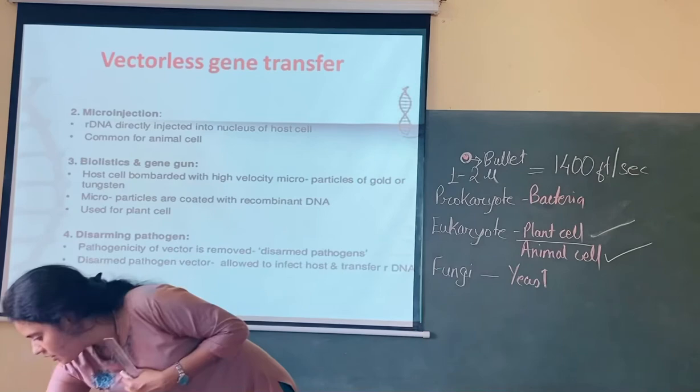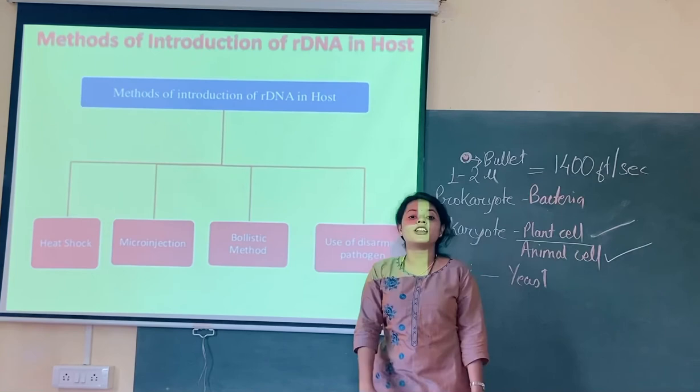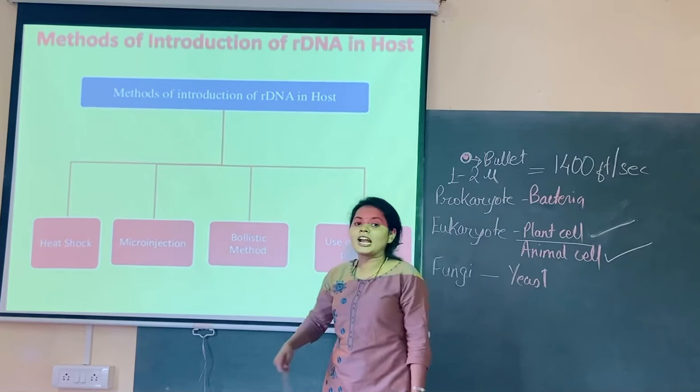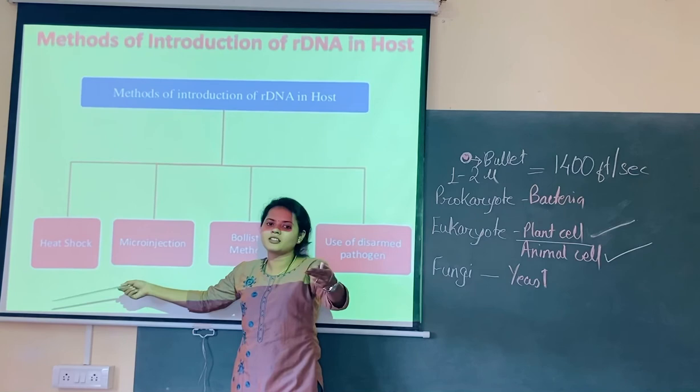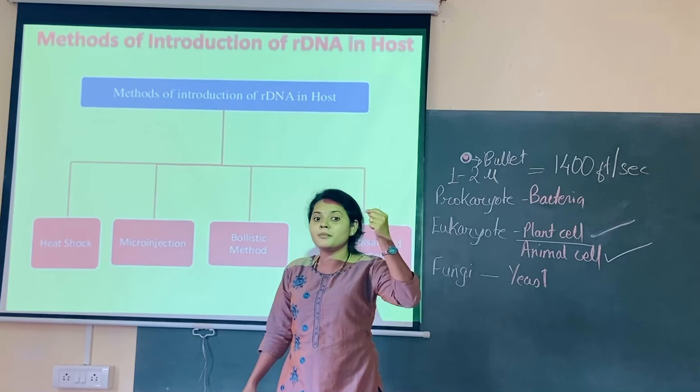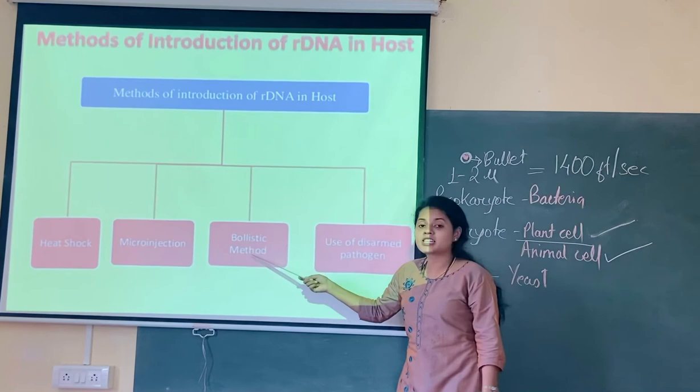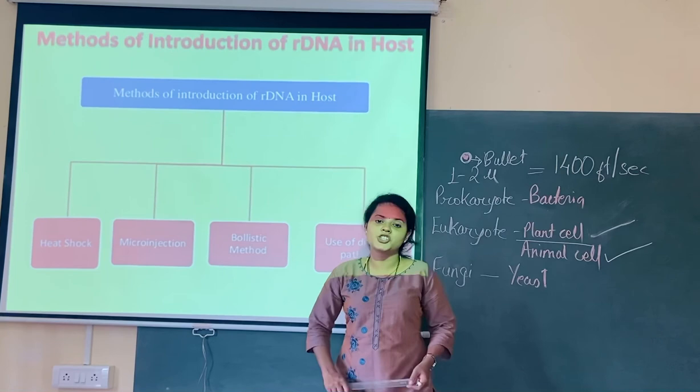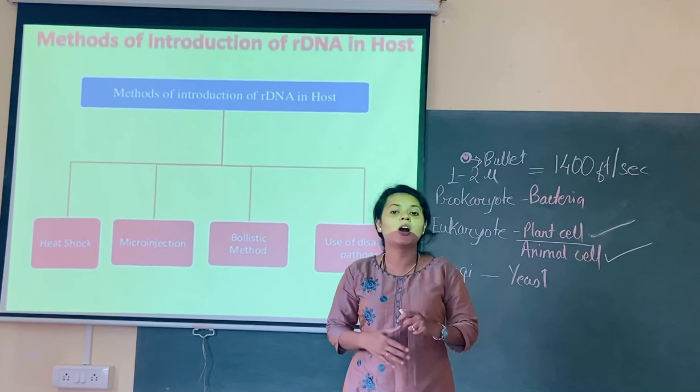These are the methods of introduction of recombinant DNA without a vector — vectorless gene transfer. Before heat shock, cells should be treated with calcium ions as divalent cations. Then microinjection, biolistic method or gene gun method, and use of disarmed pathogen to transfer the gene of interest. That's all for today, students. In the next video, I am going to tell you exactly how the process of recombinant DNA technology works. Thank you.